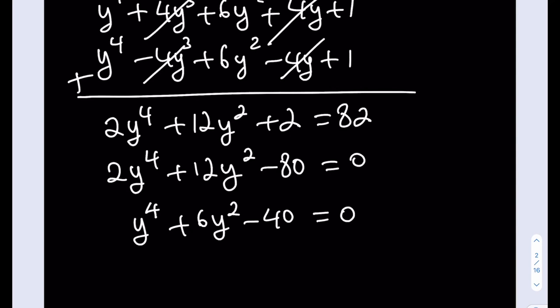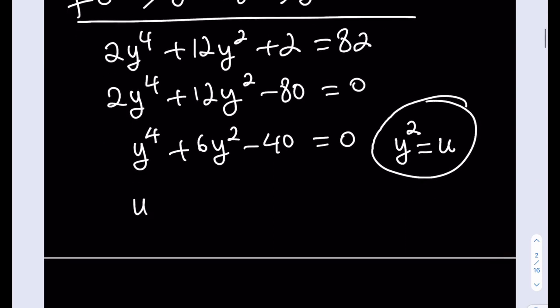This is a biquadratic equation. Yes, it's quartic, but look, there's no y cubed, there's no y. So I can go ahead and do the usual substitution. And I really like the u substitution, not just for integrals. So I'm going to call y squared equals u. Then u will see what happens. u squared plus 6u minus 40 is equal to 0.